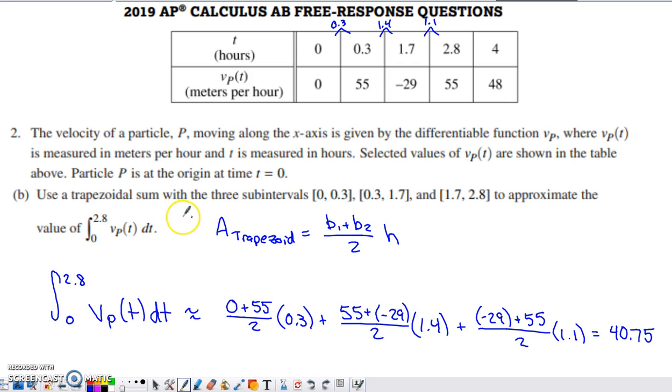Part B asks us to use a trapezoidal sum. The subintervals for the sum are indicated within the table, so we've got one subinterval going from 0 to 0.3, a second subinterval from 0.3 to 1.7, and then a final subinterval from 1.7 to 2.8. Before I did anything else, I noticed what my change in time was on each of those: 0.3 for the first subinterval, 1.4 for the next, and then 1.1 for the last.